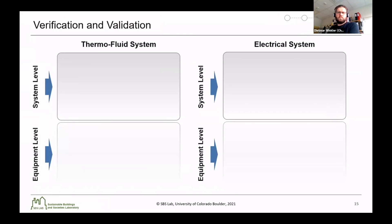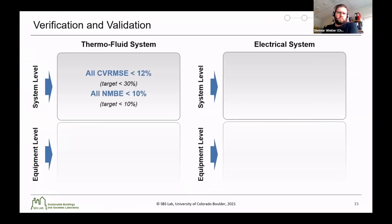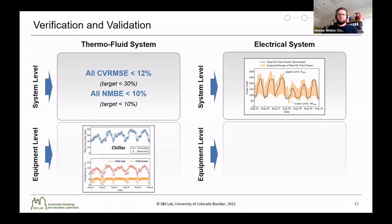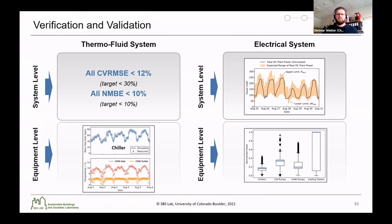For verification and validation, we looked across both thermofluid and electrical systems at both system and equipment levels. For the thermofluid system at the system level, we evaluated the coefficient of variation of the root mean square error and the normalized mean biased error to ensure all measured points were within industry standard targets. At the equipment level, we looked at a variety of equipment at different instances within the simulation, and for the chiller as an example, the simulation and measured data matched very well. For the electrical system at the systems level, we set upper and lower limits for the measured data and verified that the simulation always remained within those expected limits — this was necessary because the system does not have electrical submetering and the plant also provides other functions including district heating.